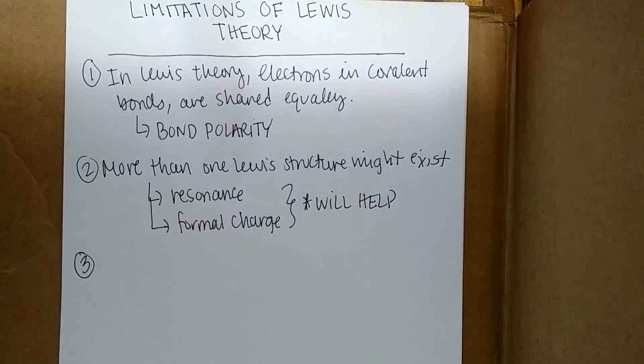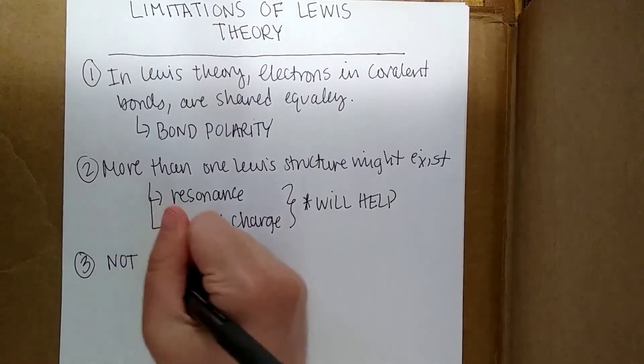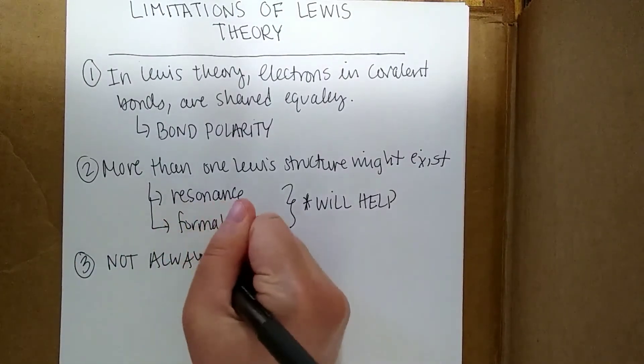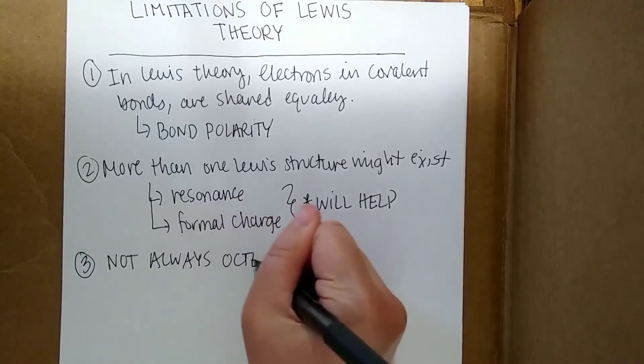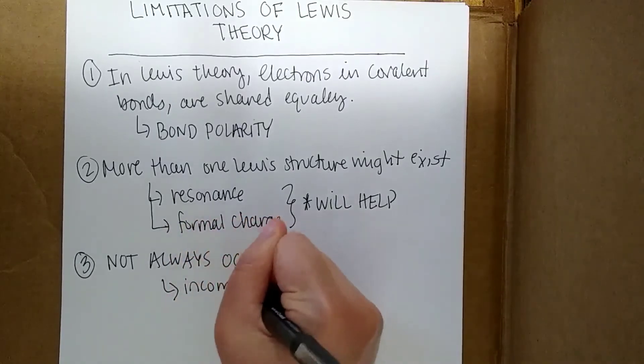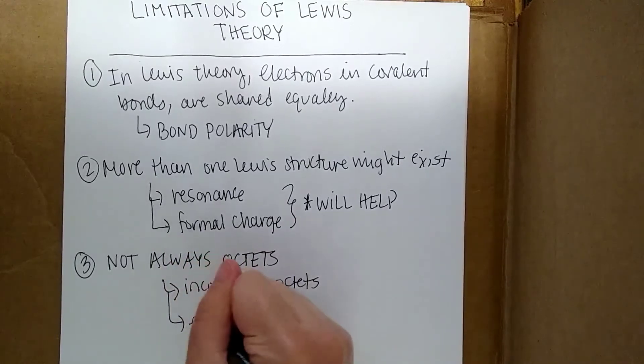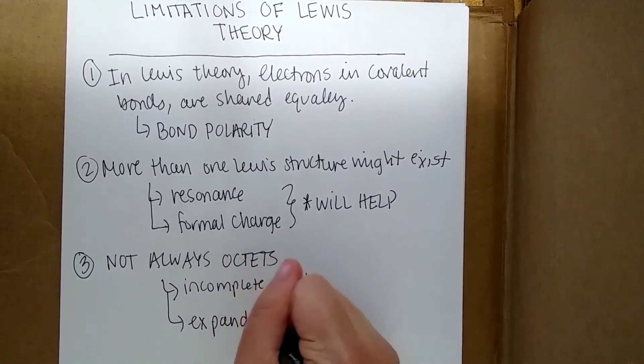Three. Not everything follows the octet rule. So there are some exceptions we need to worry about, and I'll teach you how to think about those. There's incomplete octets and expanded octets, and I'm going to show you some examples of those.